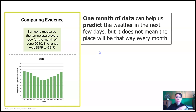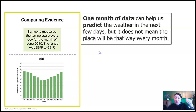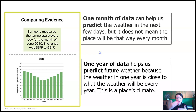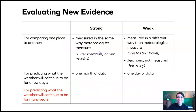One month of data can help us predict the weather in the next few days, but that doesn't mean the place will be that same way every month. One year of data helps us predict future weather, because the weather in one year is close to what the weather will be every year. This is a place's climate, and climate is what we need to know to pick the island.